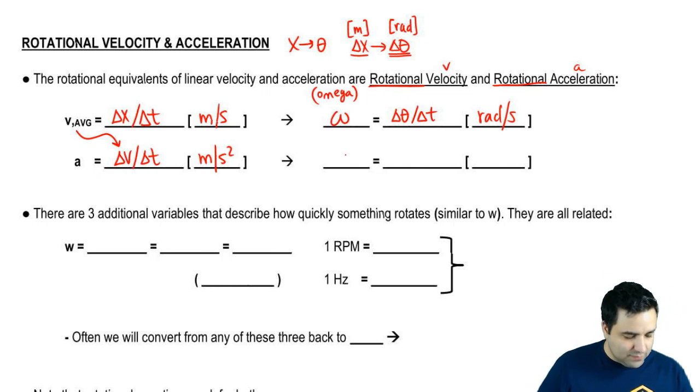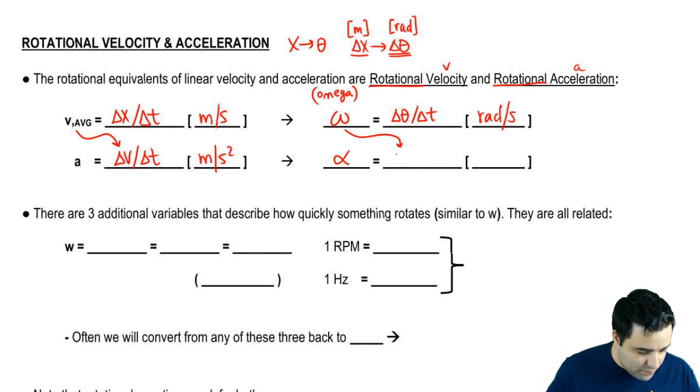And the acceleration is very similar. Instead of a, we're going to have alpha, which is a Greek a. Acceleration is velocity over time. Rotational acceleration would be angular velocity over time, so it's delta omega over delta t, and it's radians per second squared.